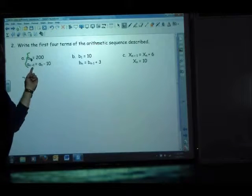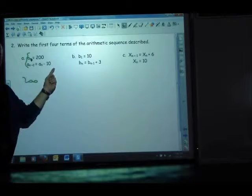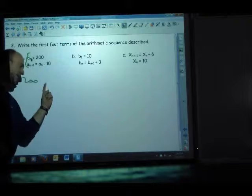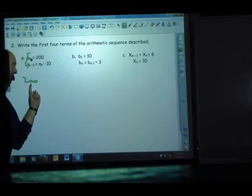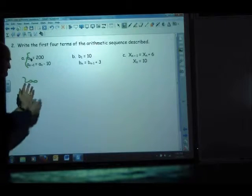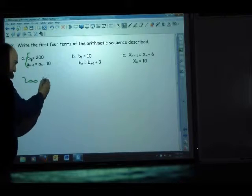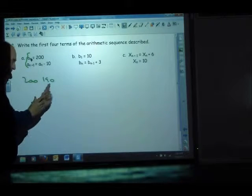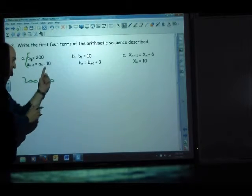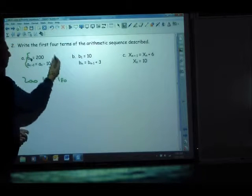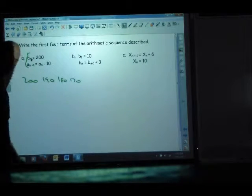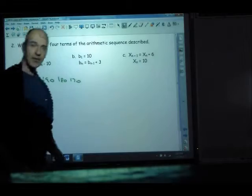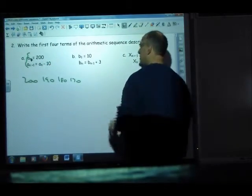To get a term down the line, take the previous and subtract 10 from it. So, if I want the second term, take the previous and subtract 10 from it. So, 200, take away 10. 190. If you have the third term, take the previous and subtract 10. 180. They want the first four terms. 170. So, don't let the notation be funneled.